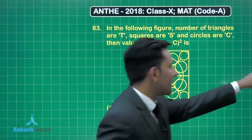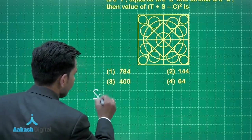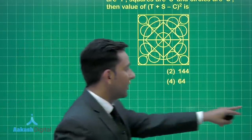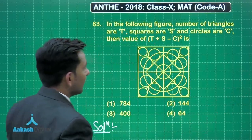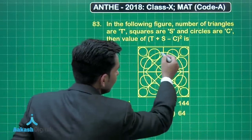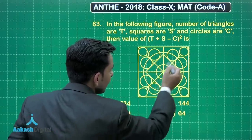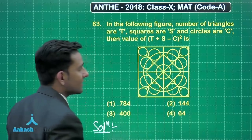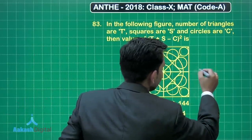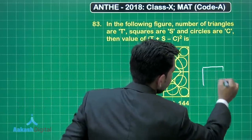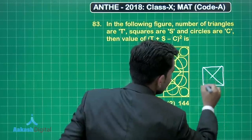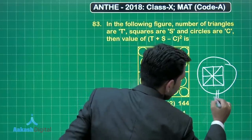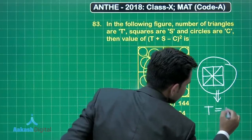So first, let's count the number of triangles. So how we can count the number of triangles in the given figure? You can see that here we have a square-like structure, and in this structure diagonals are joined, as well as the midpoints of the opposite sides are also joined. That means we are getting a square in which diagonals are joined and midpoints are joined. So in this structure, we have a total number of triangles as 16.